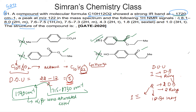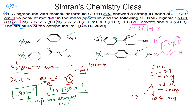Looking at the 1H NMR data, we have signals at delta 8.1–8.07, i.e., in the 7–8.5 range, with three aromatic signals: one corresponding to 2 hydrogens, one to 1 hydrogen, and one to 2 hydrogens. This pattern — 2H, 1H, 2H aromatic signals — indicates a monosubstituted benzene ring.